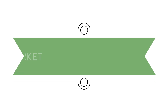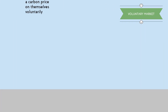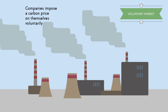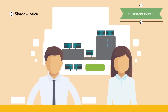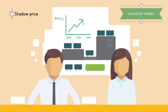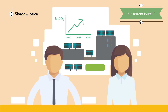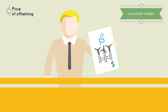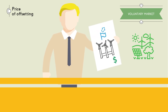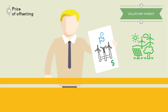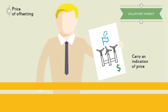Many companies that are not subject to a regulated emissions market also impose a carbon price on themselves voluntarily. There are two ways. The first is to evaluate the possible cost that the imposition of a tax on emissions could have so as to redirect future investment, known as a shadow price. And the second defines the price of offsetting, resulting from buying certified emission reductions awarded when they carry out social and environmentally responsible projects in emerging economies. These tools carry an indication of price so that they serve as a motor for implementing measures to improve the efficiency of the company.